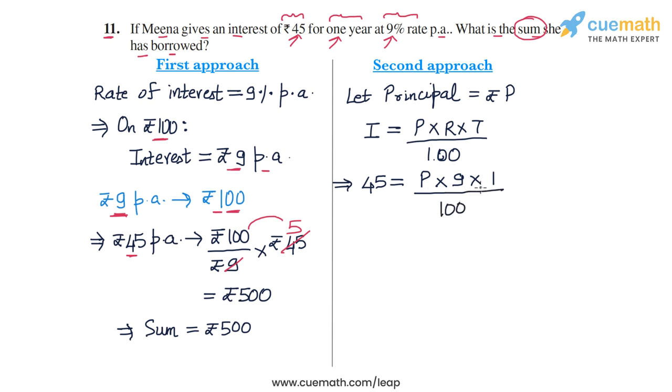From this equation, we can now calculate the value of P. To calculate P, we take 100 to the left-hand side, multiply this by 45, and then we divide that product by 9. So we will get 45 into 100 divided by 9. And how much is this?